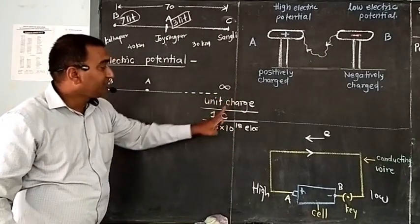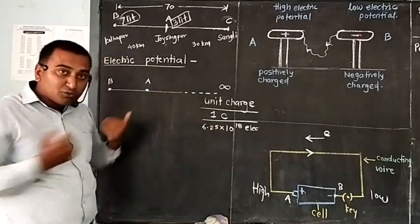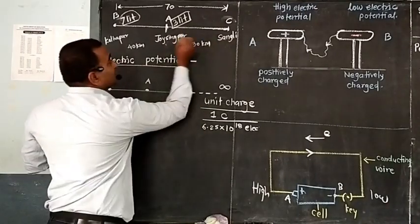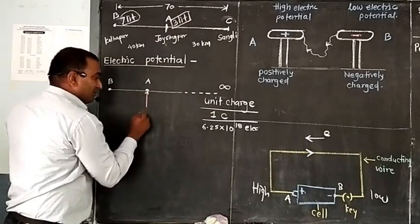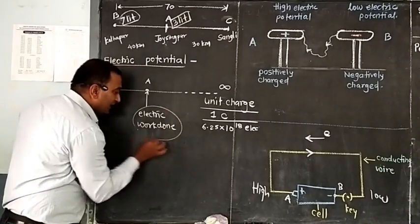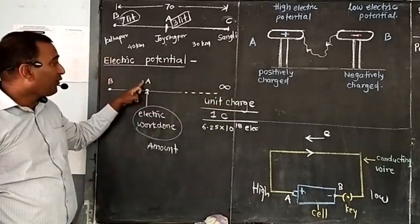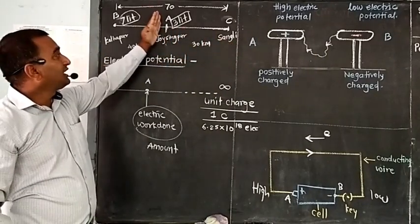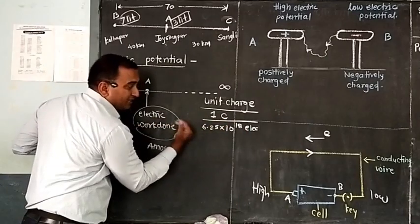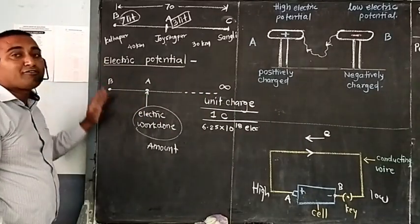That unit charge is at infinity — that means 1 Coulomb charge, meaning 6.25 × 10^18 electrons, is at infinity. And you want to bring those electrons to point A. Then we have done electric work. Some amount of electric work is done. Whatever will be the amount of electric work done to bring this 1 Coulomb unit charge from infinity to point A — that amount is called the electric potential of point A.